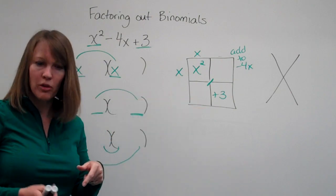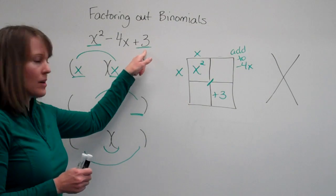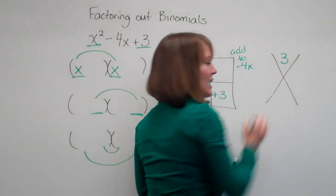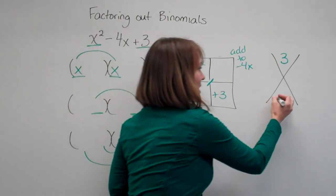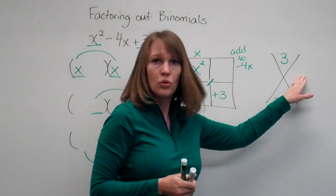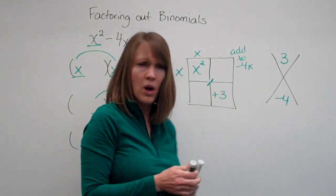But wait, that's like that X method we've been using. We can set it up the same way. The numbers we're multiplying together to get is 3, and we're going to add those numbers together to get our negative 4. Now we're looking for two numbers. The only factors we have with 3 would be 3 and 1.